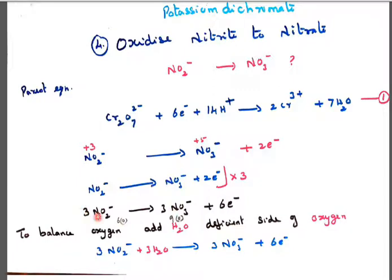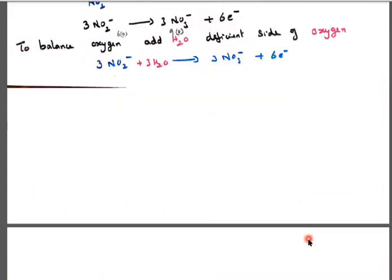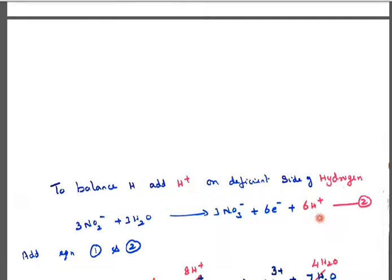To balance oxygen: 3 into 2 gives 6 oxygen on the reactant side, and 3 into 3 gives 9 oxygen on the product side. The difference is 3 oxygen, which is deficient on the reactant side. So we add 3H₂O to balance oxygen. Then to balance hydrogen, 3 into 2 gives 6H⁺ to be added to the product side. So the second equation becomes: 3NO₂⁻ + 3H₂O → 3NO₃⁻ + 6e⁻ + 6H⁺.